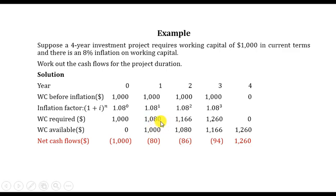At the end of year 3, you'll have 1,166, but you'll be requiring 1,260. So you'll have to inject the difference, which is 94. At the end of year 4, you require nothing, but you already have invested 1,260. So you'll recoup it. This is a cash inflow while all the others were cash outflows.